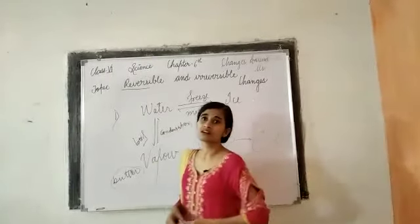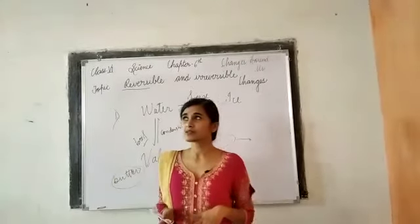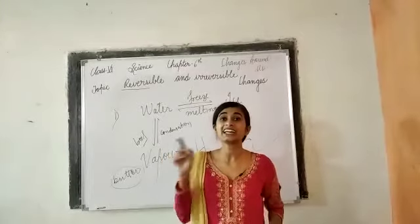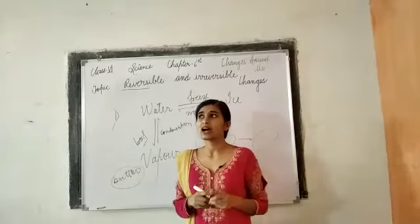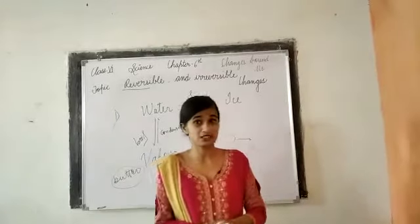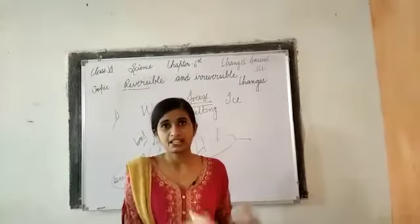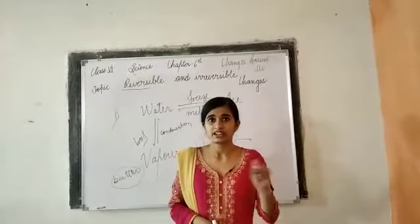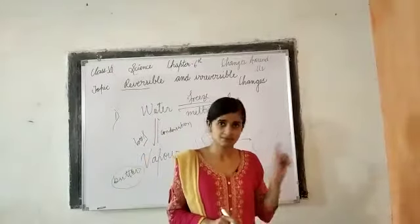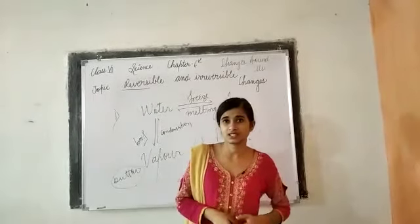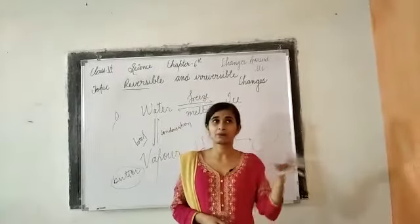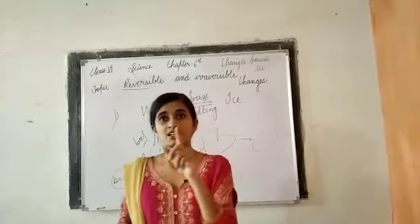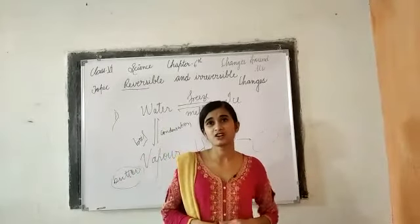The irreversible change is either desirable or undesirable. Desirable means that which is good for us — for example, cooking food is desirable because we want the food to be cooked. But spoilage of food is undesirable — we do not want our food to spoil. Both cooking and spoilage of food are irreversible changes, because you cannot convert cooked food back to raw. Cooking of food is a desirable irreversible change, and spoilage of food is an undesirable irreversible change.